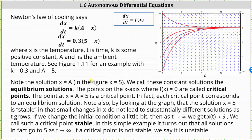We call these constant solutions the equilibrium solutions. The points on the x-axis where f of x is equal to zero are called the critical points. Recall that f of x equals dx/dt, the derivative function value. This indicates that x equals 5 is a critical point. In fact, each critical point corresponds to an equilibrium solution.